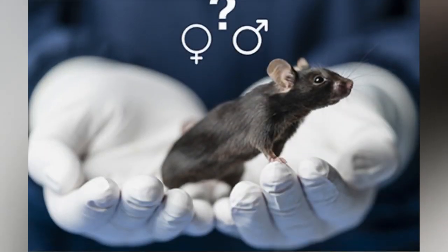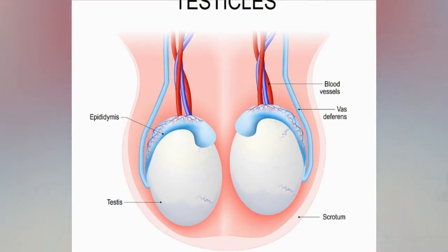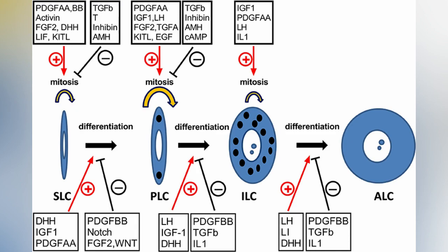They then looked at markers for sexual health in both groups of mice, including testicular mass, Leydig cell numbers, and sperm count. And the result?